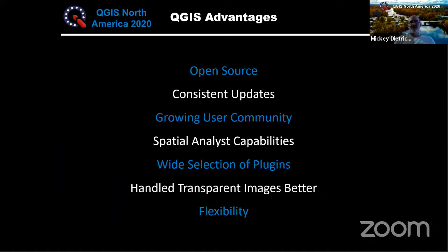We chose QGIS as our desktop program. The main reason is being open source — it's free. But beyond that, QGIS consistently puts out updates, unlike some open-source projects. There's also a growing user community; you can Google and find videos for help and use forums, so there's good support. Additionally, QGIS already included a lot of the spatial analyst functionality we were paying for through ESRI extensions, which was another big reason for the switch.